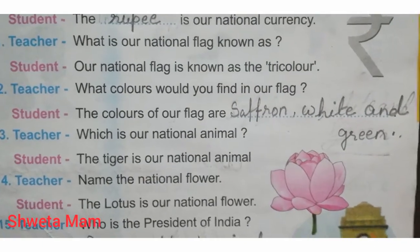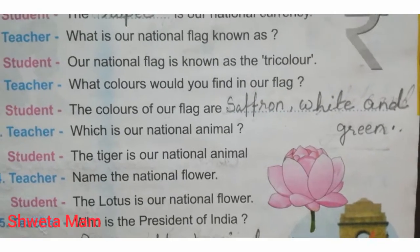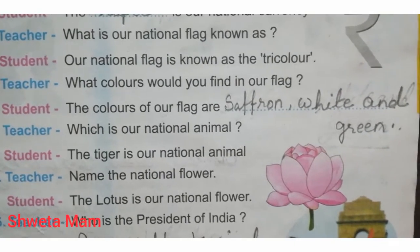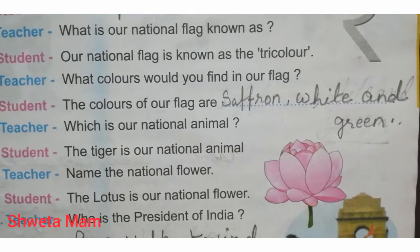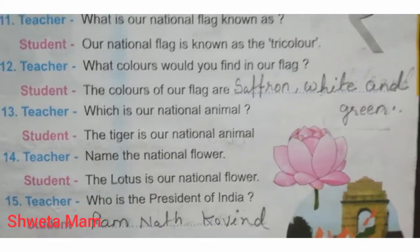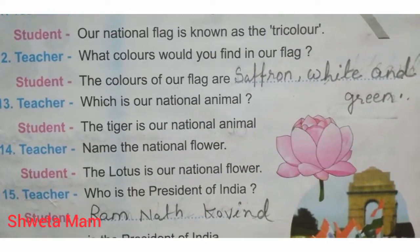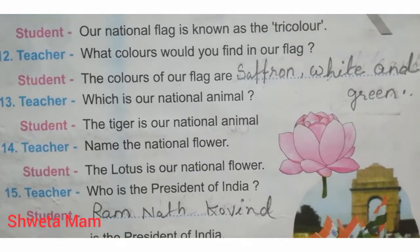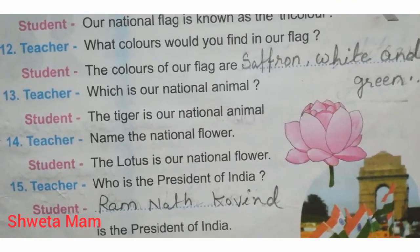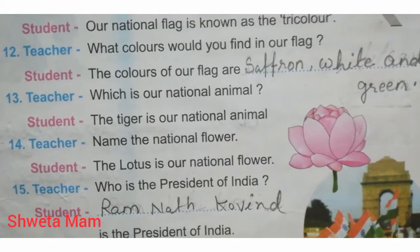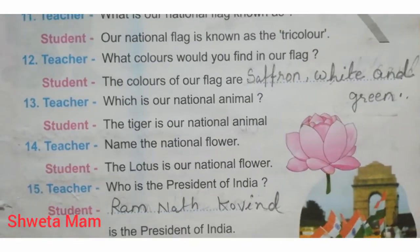Teacher: What colors would you find in our flag? Student: The colors of our flag are saffron, white and green. Teacher: Which is our national animal? Student: The tiger is our national animal. Question number 14 — Teacher: Name the national flower. Student: The lotus is our national flower.